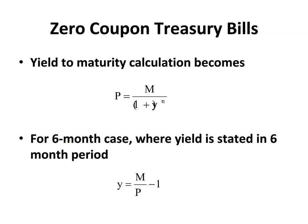What I want to do now is demonstrate how to calculate yield to maturity with zero coupon treasury bills. Remember, treasury bills are less than a year, one payment, and they're discount bonds, so they don't have any coupon rate. They just have the maturity M at the end. Here you see this formula: price equals M divided by 1 plus Y to the N. For the 6 month case, where yield is stated in the 6 month period, you can say N equals 1, and then rearrange the formula as you see at the bottom. Calculating yield to maturity for zero coupon treasury bills is very easy.